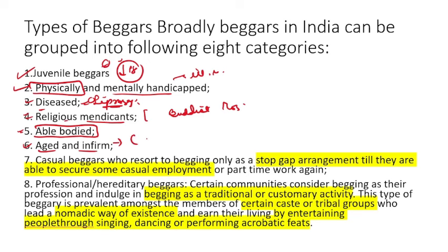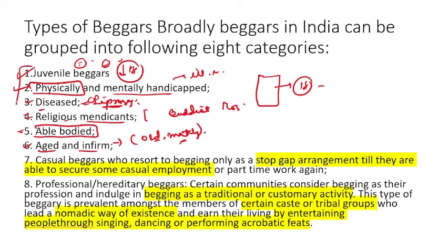Aged and infirm beggars are those who are old and whose mental faculties have declined with age. Casual beggars are those who beg as a stop-gap arrangement — only until they find casual employment or part-time work. Begging for them is temporary.